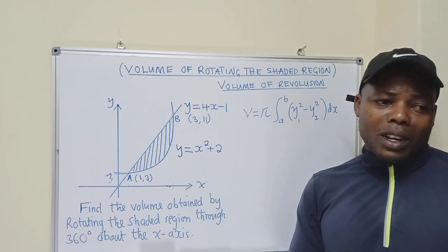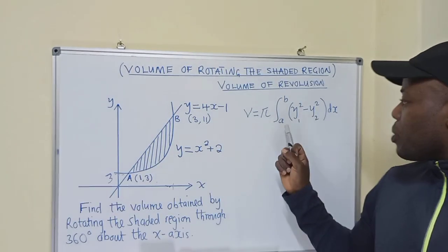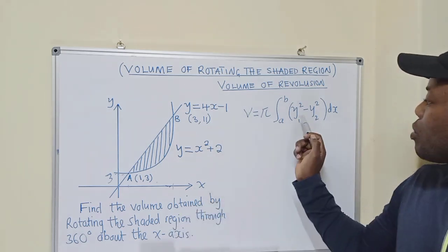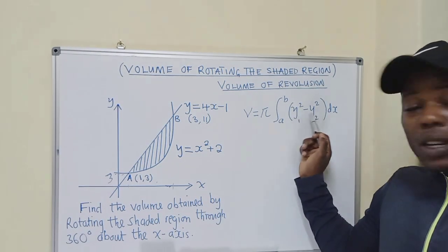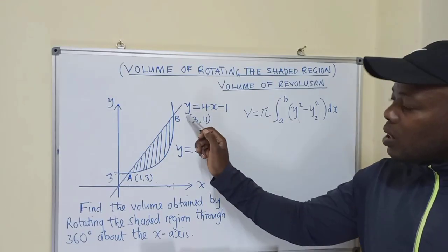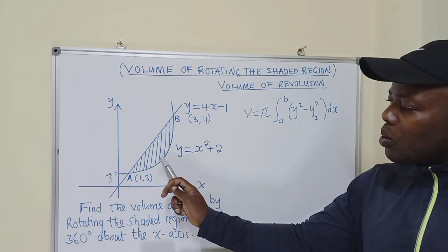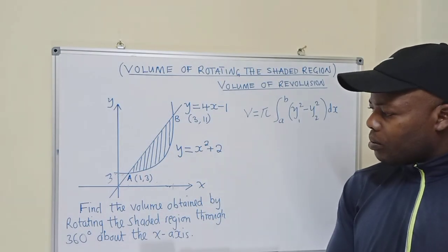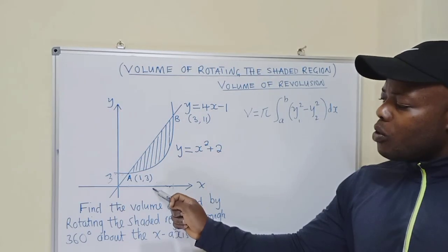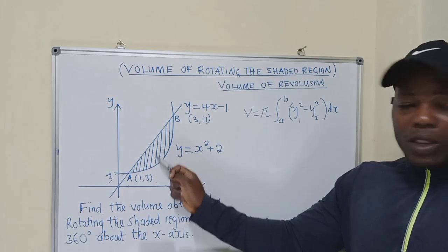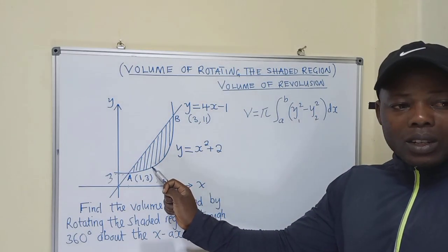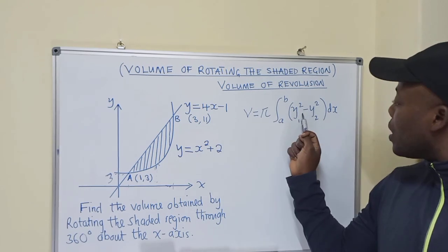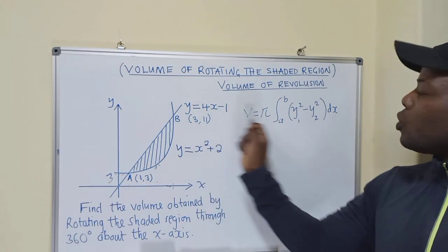It may look complicated, but it's not. Let me explain what the formula is about. These are limits, and when it's being rotated around the x-axis, we put y to the power 2. There are two y's — they stand for these equations. The one that is below will be y1, the one you're touching first as you move through the shaded region. And the one you touch second will be y2.